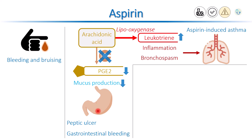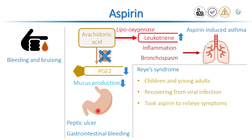A rare but important side effect worth mentioning is Reye's syndrome. Reye's syndrome mainly occurs in children and young adults who are recovering from a viral infection, for example a cold, flu, or chickenpox. In most cases, they have taken aspirin to relieve symptoms. In these patients, the combination of viral infection and aspirin can lead to significant liver damage.